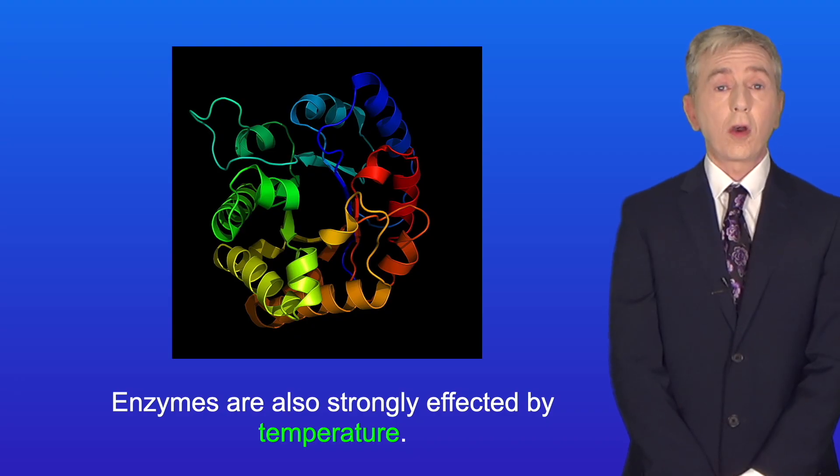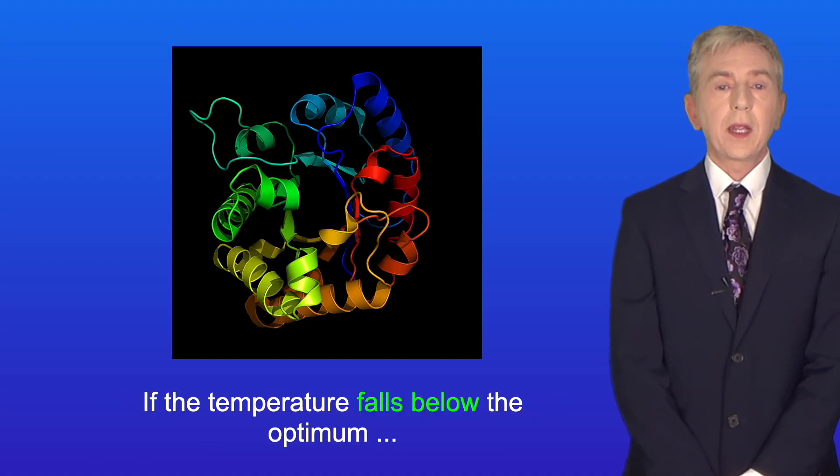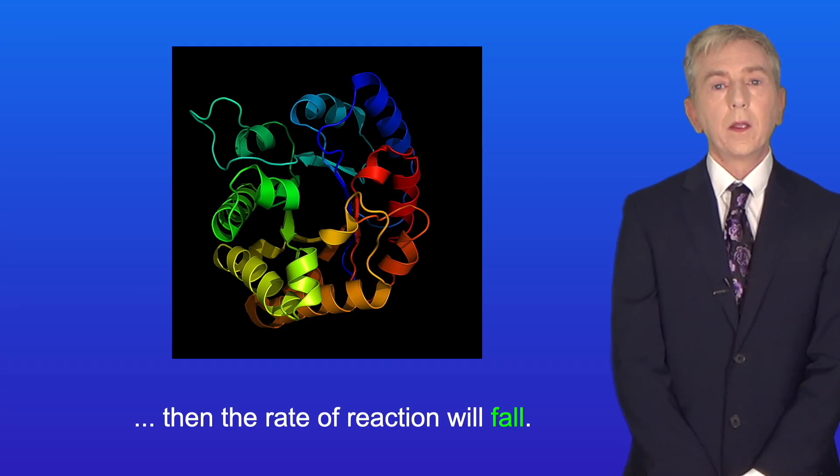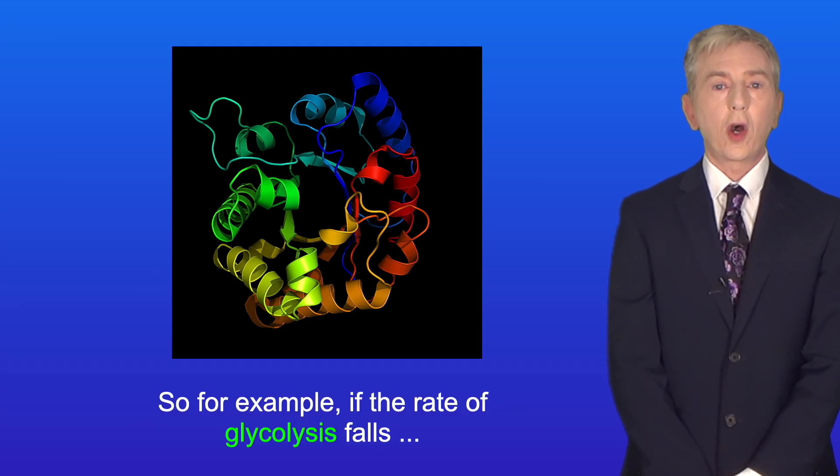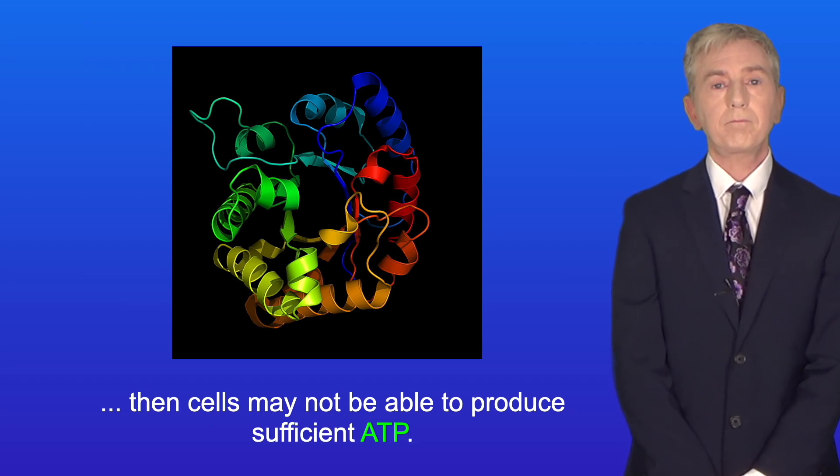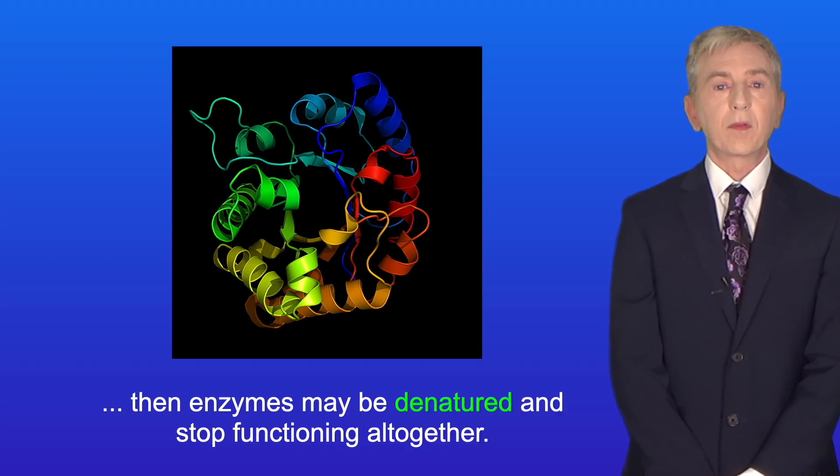Enzymes are also strongly affected by temperature. Enzymes function at their fastest rate at the optimum temperature. If the temperature falls below the optimum, then the rate of reaction will fall. So for example, if the rate of glycolysis falls, then cells may not be able to produce sufficient ATP. And if the temperature rises above the optimum, then enzymes may be denatured and stop functioning altogether.